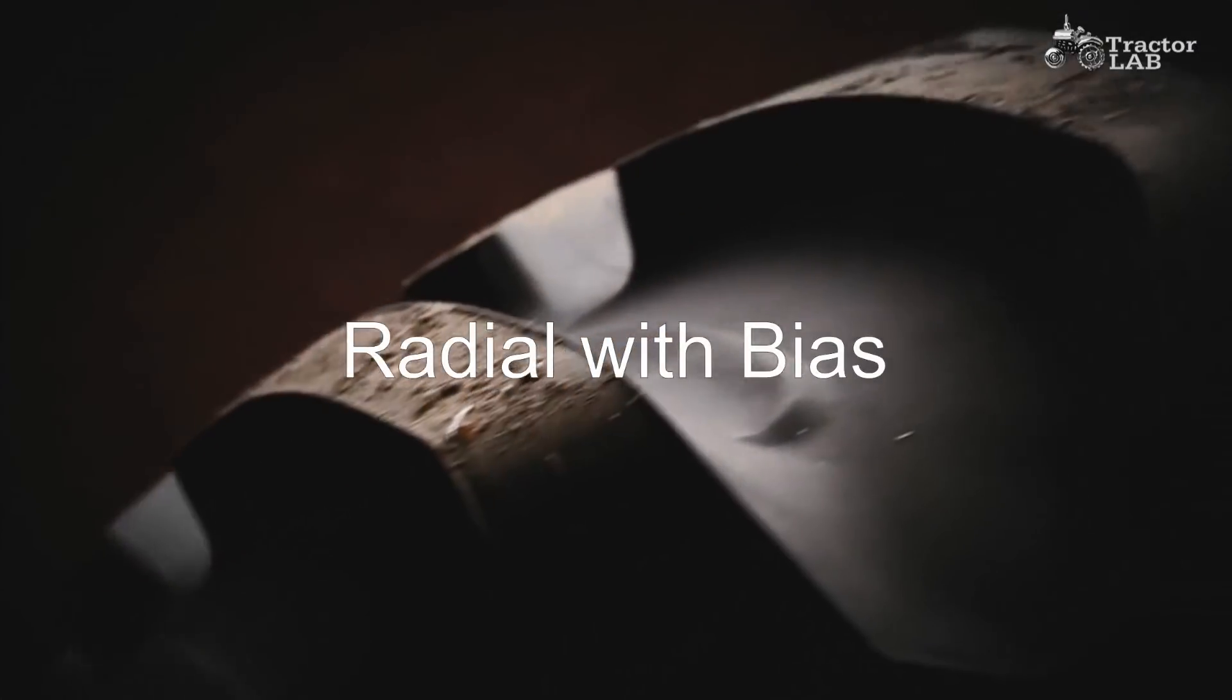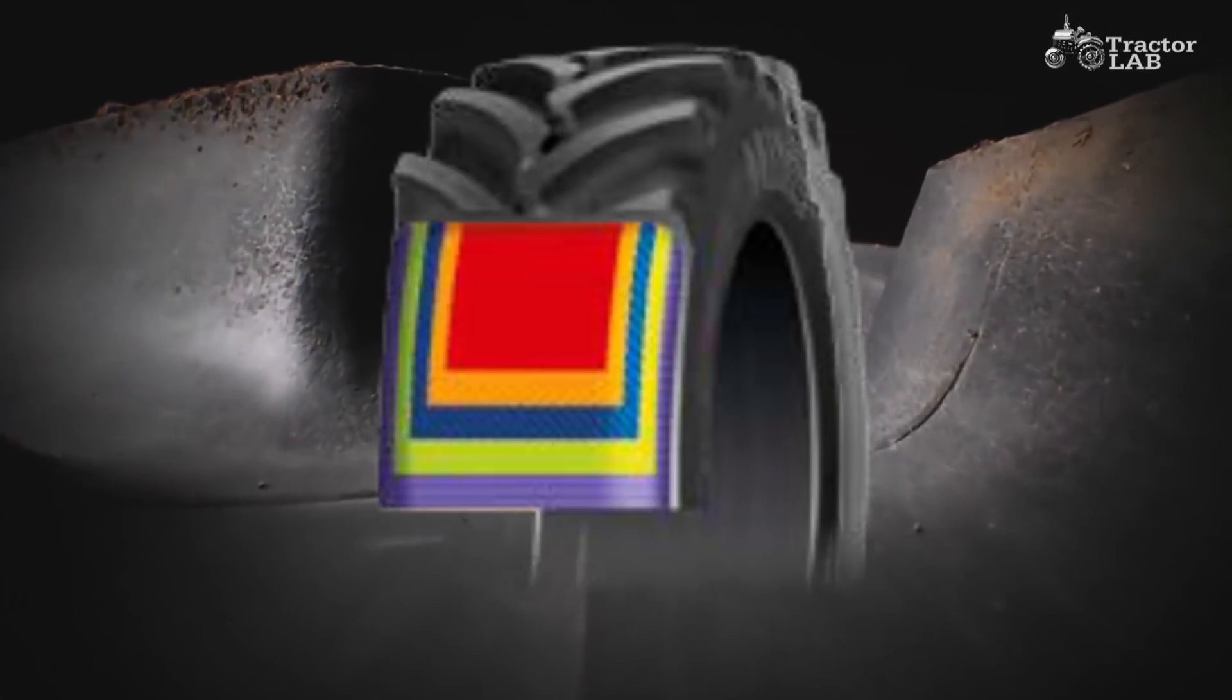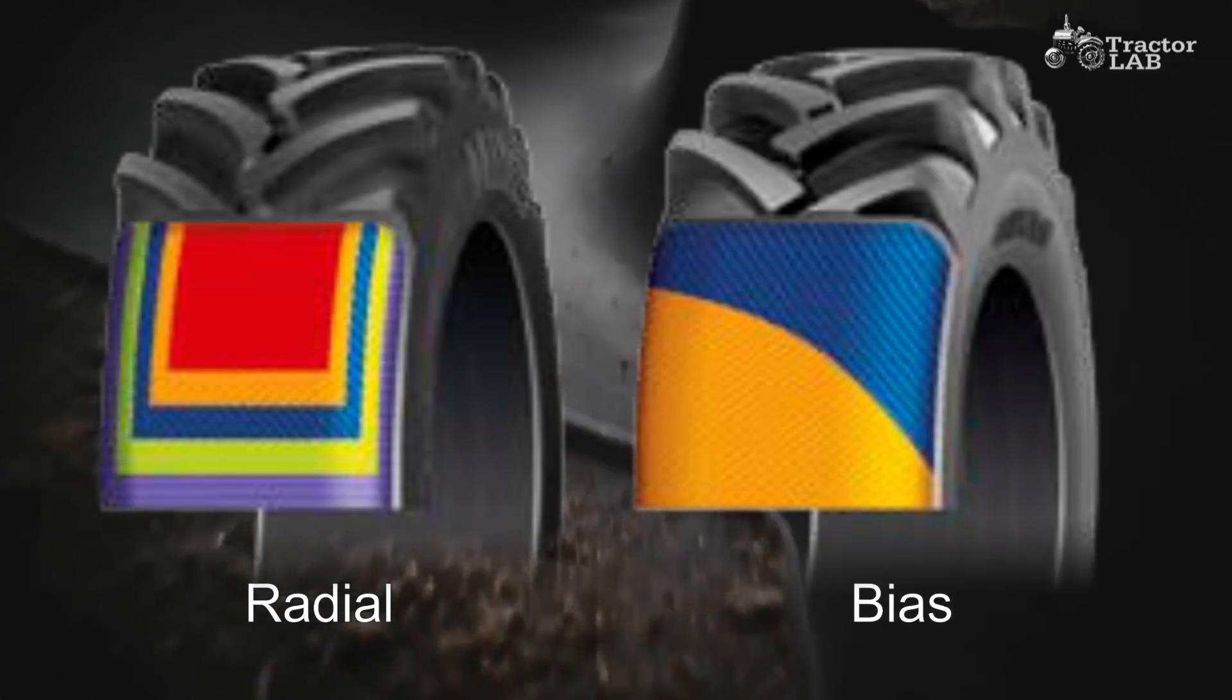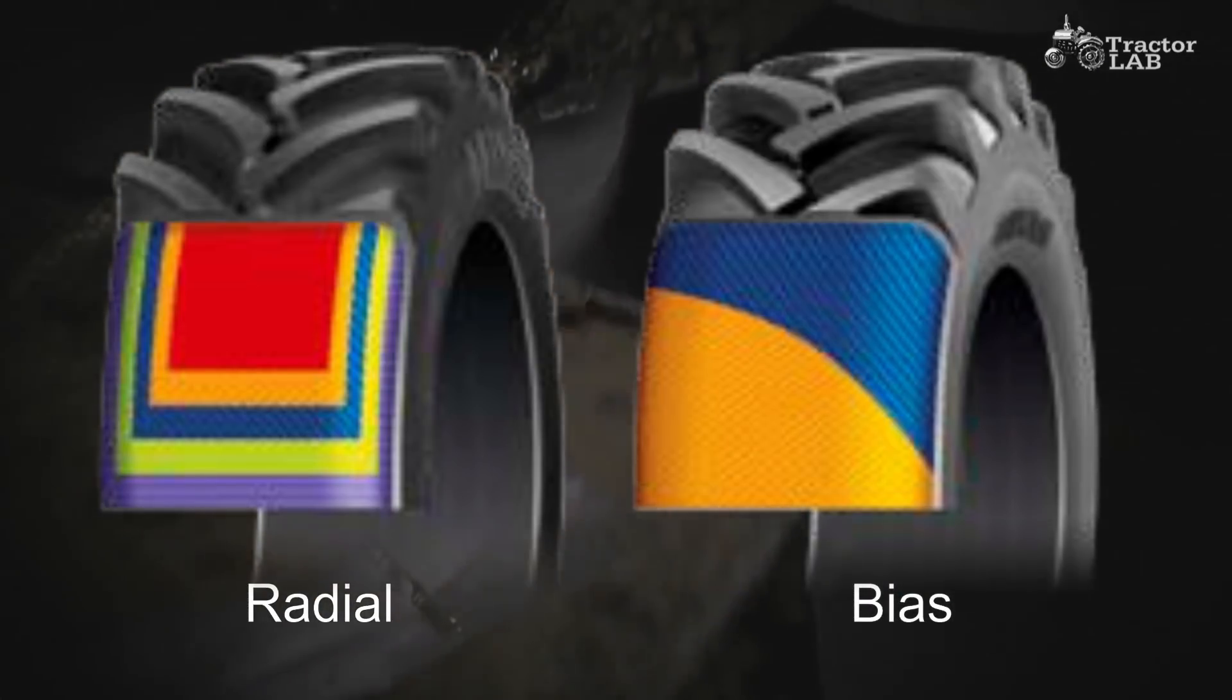Radial with bias. Radial tire construction is substantially different from bias tire construction. The crossed plies of the bias tire run diagonally from bead to bead.